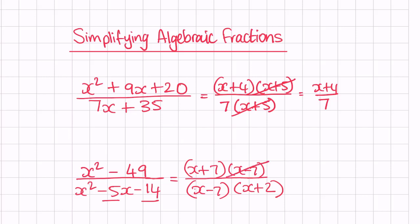We can cancel out x minus 7, and that leaves us with x plus 7 over x plus 2. That's our final answer.